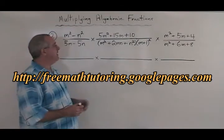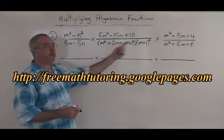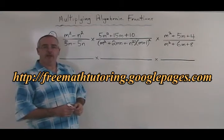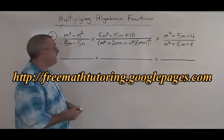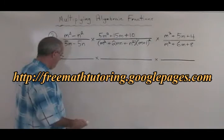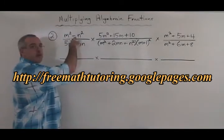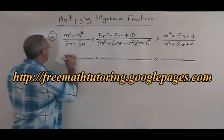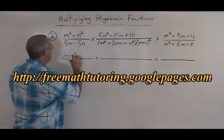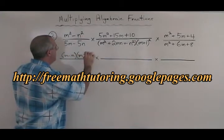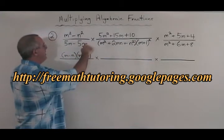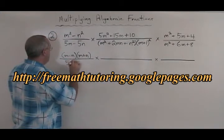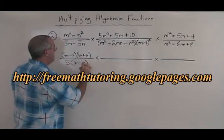In Example 2, we have 3 algebraic fractions that are being multiplied, and the first step, as usual, is to factor everything. The first numerator is a difference of squares and gives us (m minus n)(m plus n). The denominator has a common factor and gives us 5(m minus n).